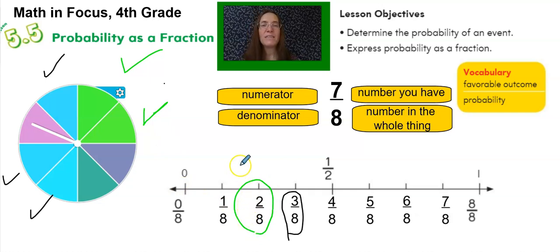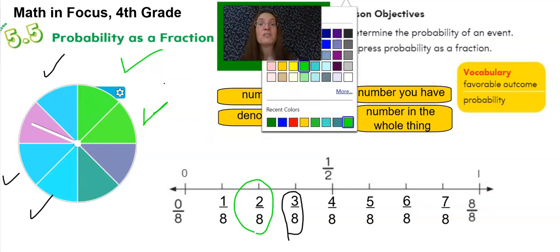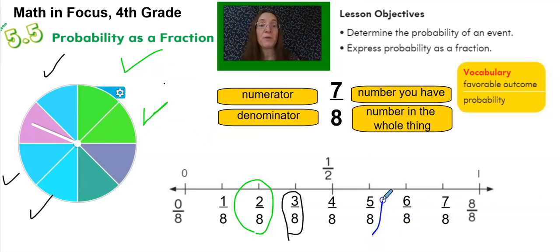But what if I wanted either green or blue? Well, that's one, two, three, four, five favorable outcomes. So I'm going to circle this right here. I have a better than halfway chance of being there. That means it is more likely to get what I want.